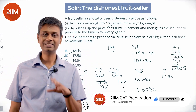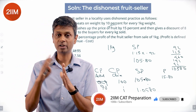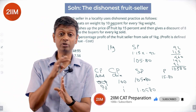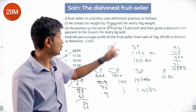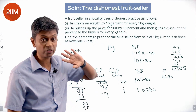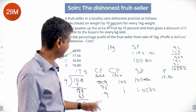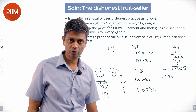To understand this: find the selling price on a base of 100. The actual cost price is 90% of that 100 because he's cheating 10% on the weight. So what he buys at 90, he sells at 105.80.